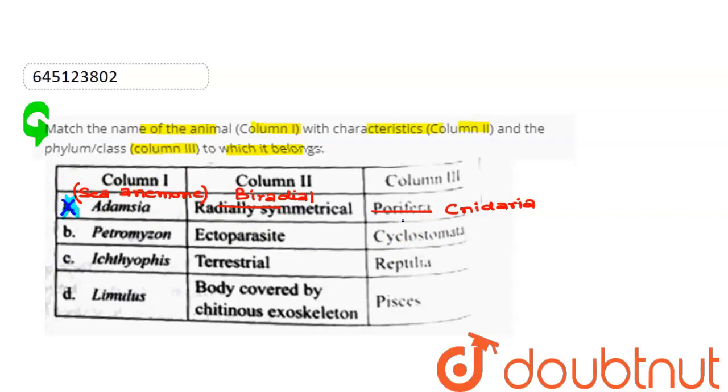Okay, so this option is completely correct. This is Petromyzon. This is Petromyzon. This is ectoparasite. It means, this is the host's outer body. That lives outside the host. And this class, we have given it, Cyclostomata.